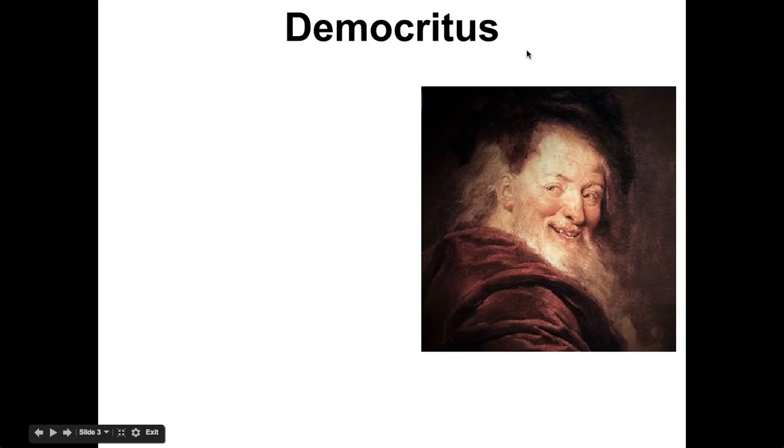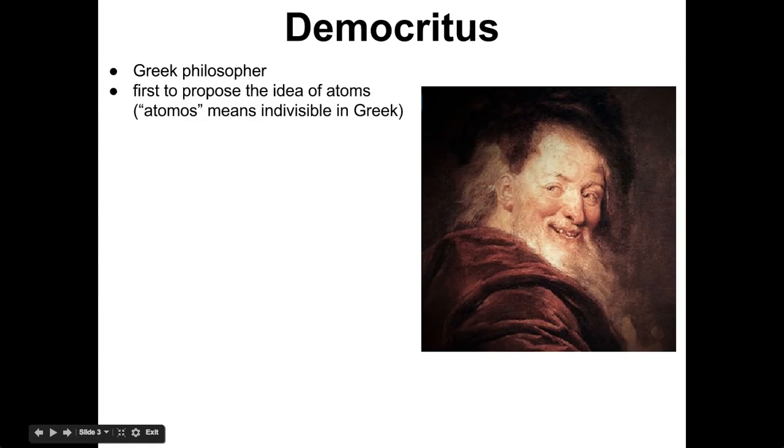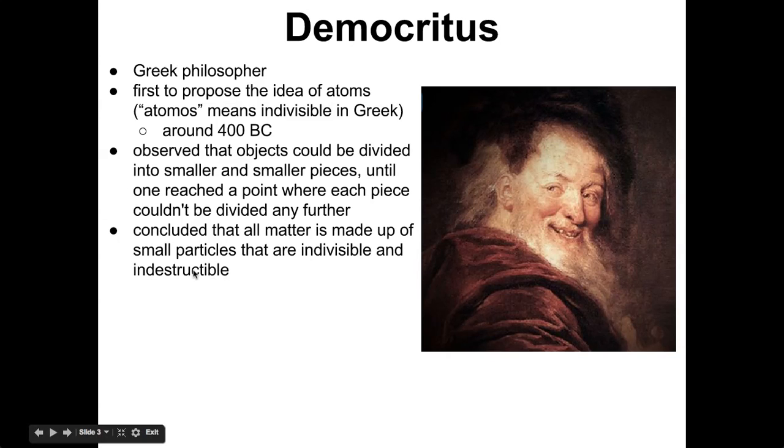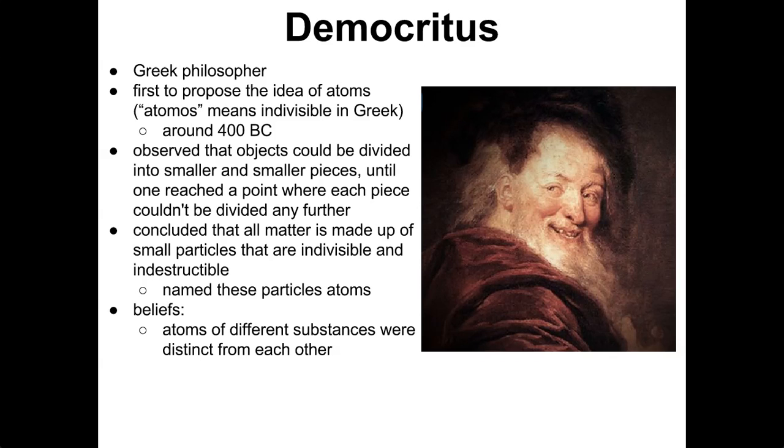Okay, so the first one we're going to talk about is this philosopher called Democritus. And he looks like a jolly fellow right here. He's a Greek philosopher. And he was the first one to propose the ideas of the atoms. And he did this around 400 BC. So this was over 2,000 years ago. And he observed that objects could be divided into smaller and smaller pieces. But eventually there was a point where you couldn't divide any further. And we kind of talked about this in the previous video. So he concluded that all matter is made up of these small particles that are indivisible and indestructible. And he called them atoms based on atomos, which means indivisible in Greek. So he just used it. It's a Greek word. The root of atom is a Greek word. So he called them atoms. Now his beliefs, because he didn't really do experiments on this, was that atoms of different substances were distinct from each other. He just believed that. He had no reason to. And that the shape of the atoms defined the properties of the substance. Again, he had no reason to believe that atoms had different shapes from one another. But that's just what he believed as a thinker, as a philosopher.